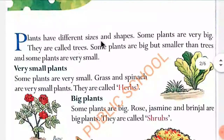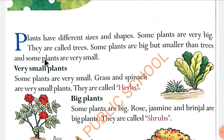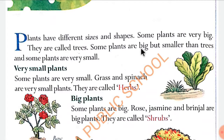Plants have different sizes and shapes — plants ke alag-alag size aur shape hote hai. Some plants are very big, kuch plants bhoot bade hote hai, they are called trees. Some plants are big but smaller than trees, kuch ped bade hote hai lekin trees se thode chhoate hote hai.